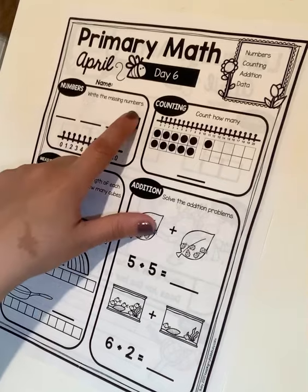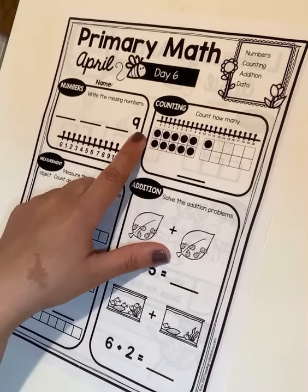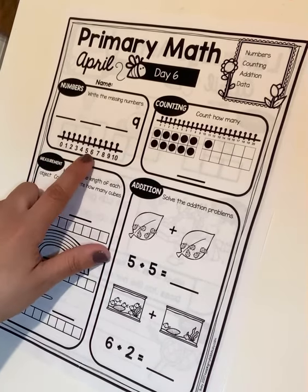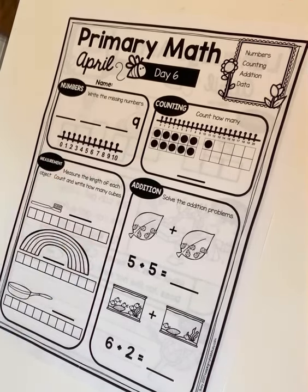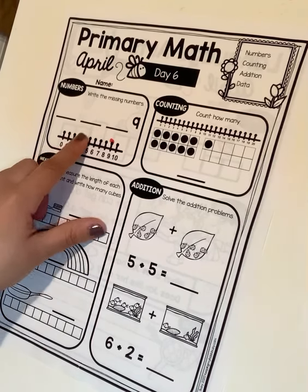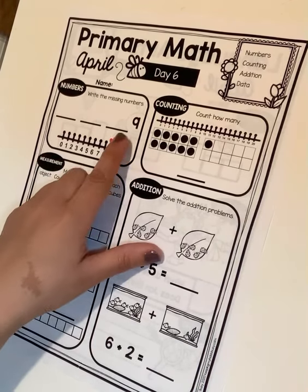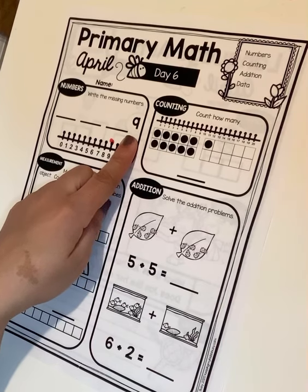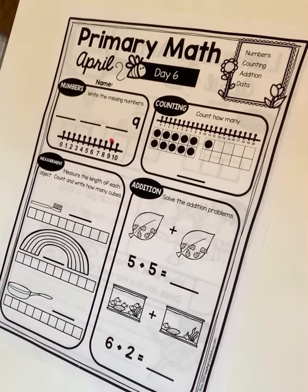So right here it says write the missing numbers. We know what to do. We're going to find number nine on our number line, which is right here. And it wants you to write the numbers that come before it. Which one comes before nine? Then behind that one? Then behind that one? It's like number nine is the line leader and who stands behind number nine.